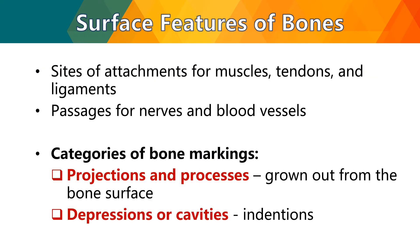The names of bones can sometimes be based on their surface features, such as sites of attachment for muscles, tendons, and ligaments, or passages for nerves and blood vessels. Categories of bone markings include projections and processes, like growths from the bone surface, or depressions and cavities, like indentations.